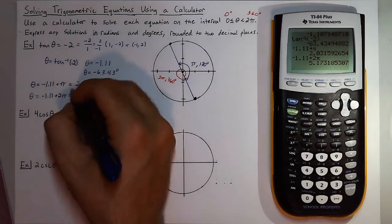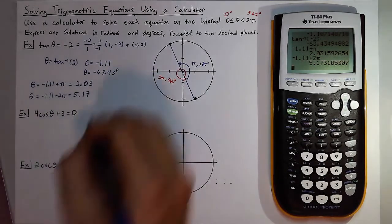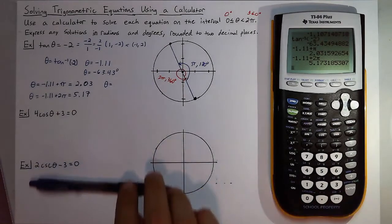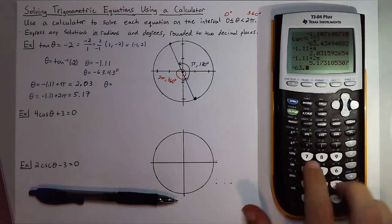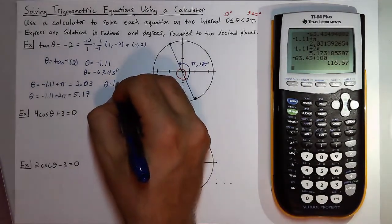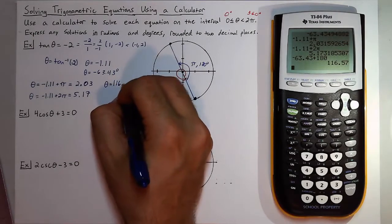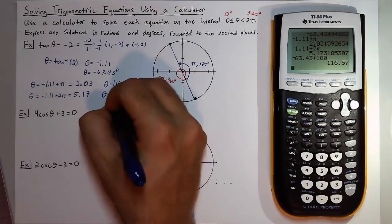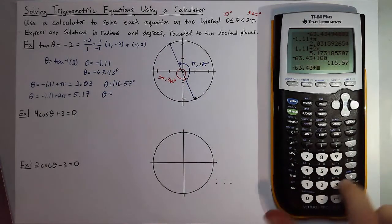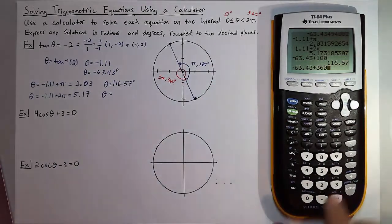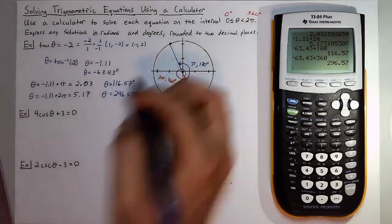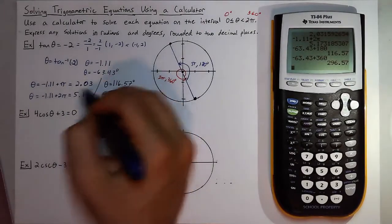Now if I want to find these in degrees I'll do something very similar. I'll add 180 to negative 63.43, so negative 63.43 plus 180 gives me 116.57 degrees. And if I take negative 63.43 and add 360, a full rotation to get the positive version of that angle, I'll get 296.57 degrees. That's how you can get all the solutions, so on the left that's radians and that's degrees on the right.